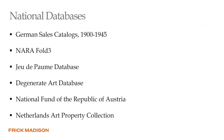Next we'll go into national databases. The main difference from multinational databases is that these do not search multiple databases from different countries — each database includes collection information regarding the activity of one nation. We're going to cover: German sales catalogs through the Getty Provenance Index, NARA Fold3, the Jeu de Paume database, the Degenerate Art database, and hopefully also the National Fund of the Republic of Austria and the Netherlands Art Property Collection.